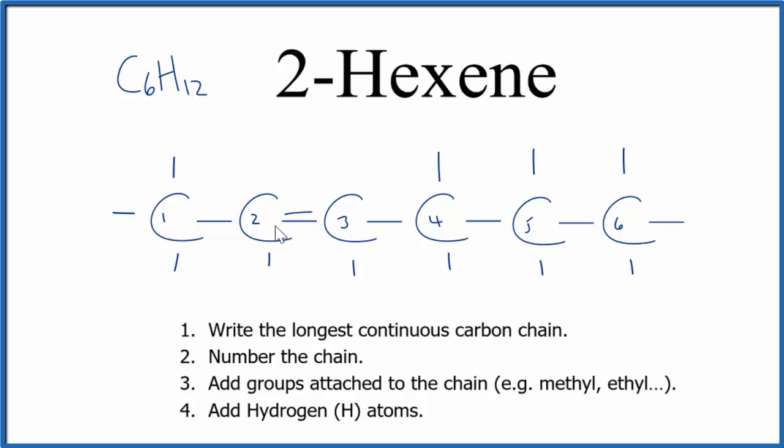When we have a double bond on interior carbons, we need to think about geometric isomers—in particular, cis and trans isomers. Let's take a look at the cis isomer for 2-hexene and then the trans isomer.